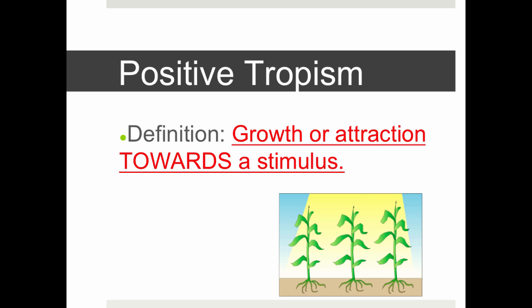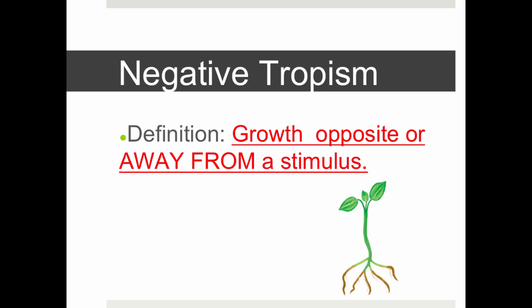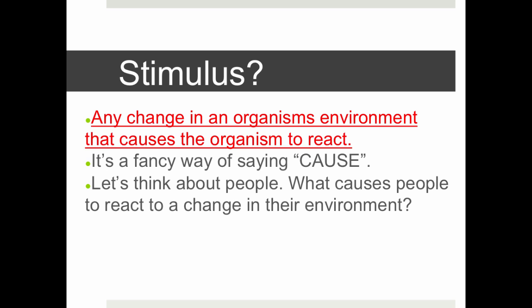Let's talk about all the different types of tropism. There's positive tropism, which is the growth or attraction towards a stimulus — when a plant or animal moves towards a stimulus. Negative tropism is exactly the opposite: when a plant or animal grows opposite or away from a stimulus. A stimulus is any change in an organism's environment that causes it to react. For example, if you touch something hot, that hot object is the stimulus, and jerking your hand away is a negative tropism — your body reacting to that external stimulus.